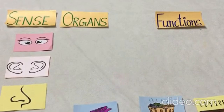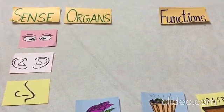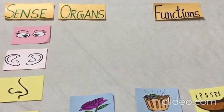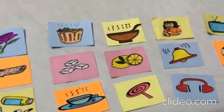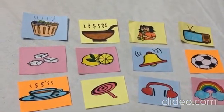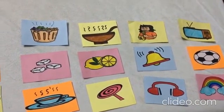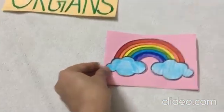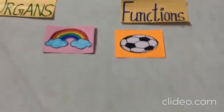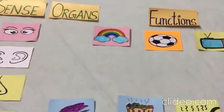Our first sense organ is our eyes. So what can we do with our eyes? We can see any color, any shape, or many things around us with the help of our eyes. With the help of our eyes we can see the colors of the rainbow, the shape of any object, and we can also watch television.